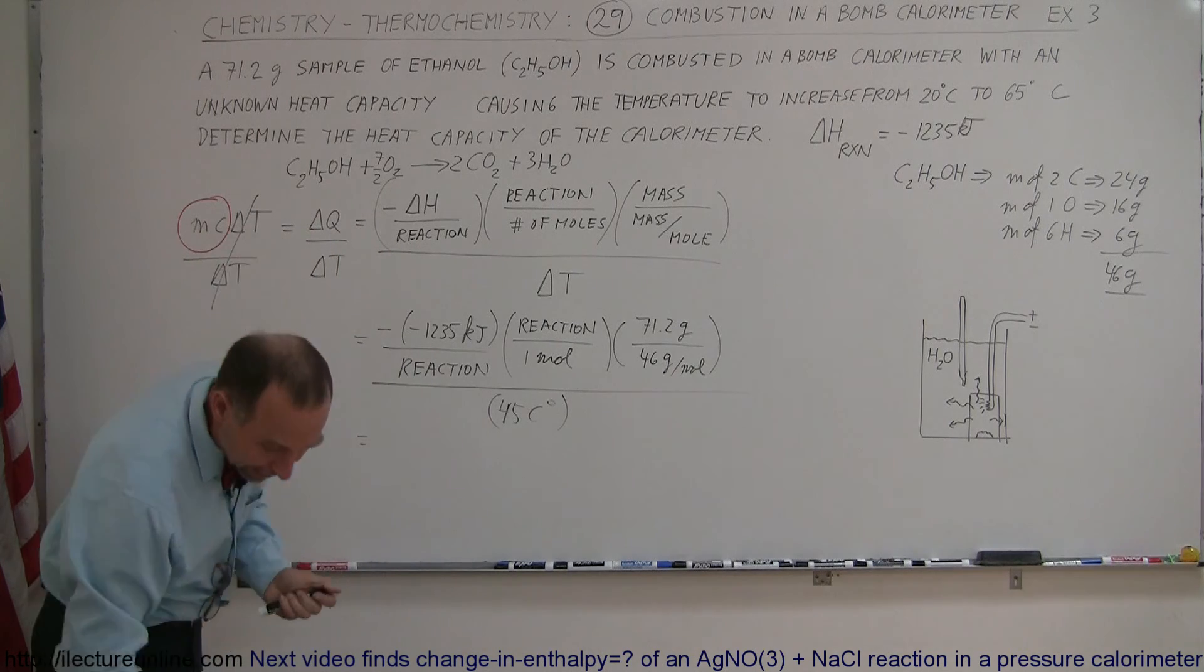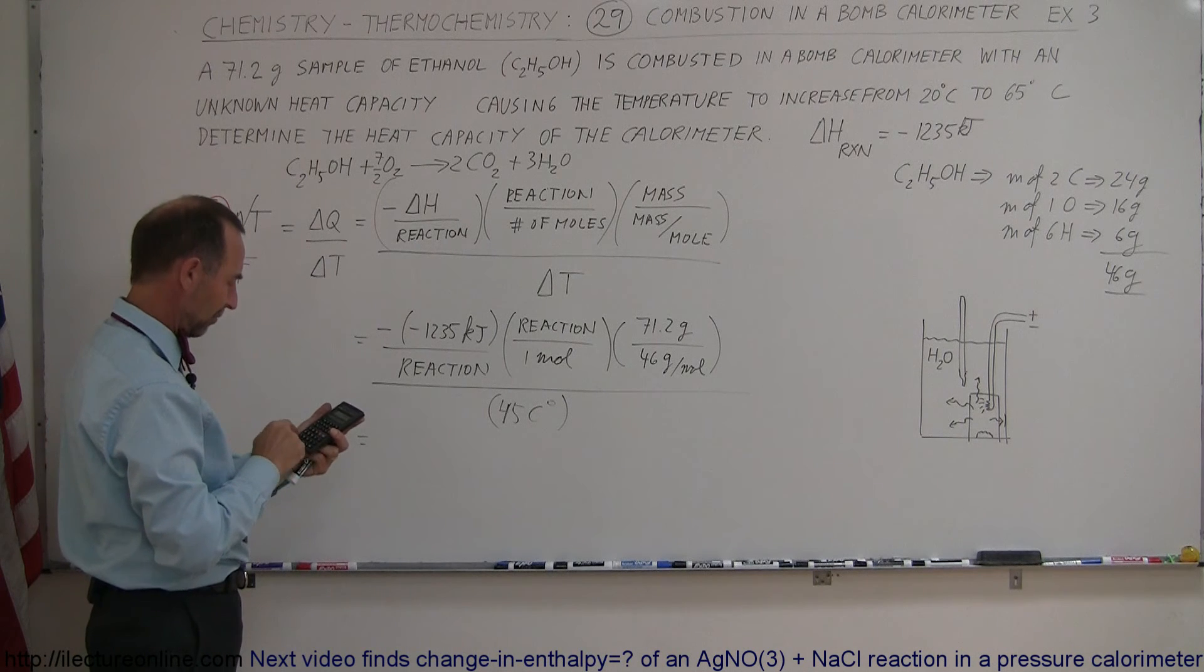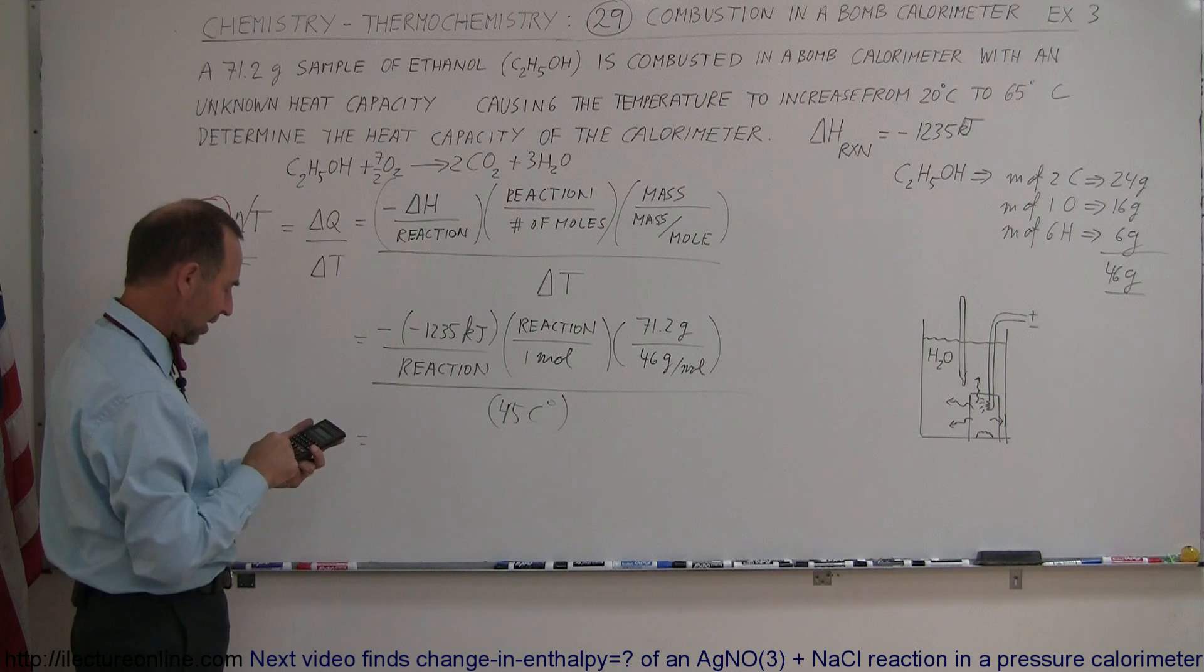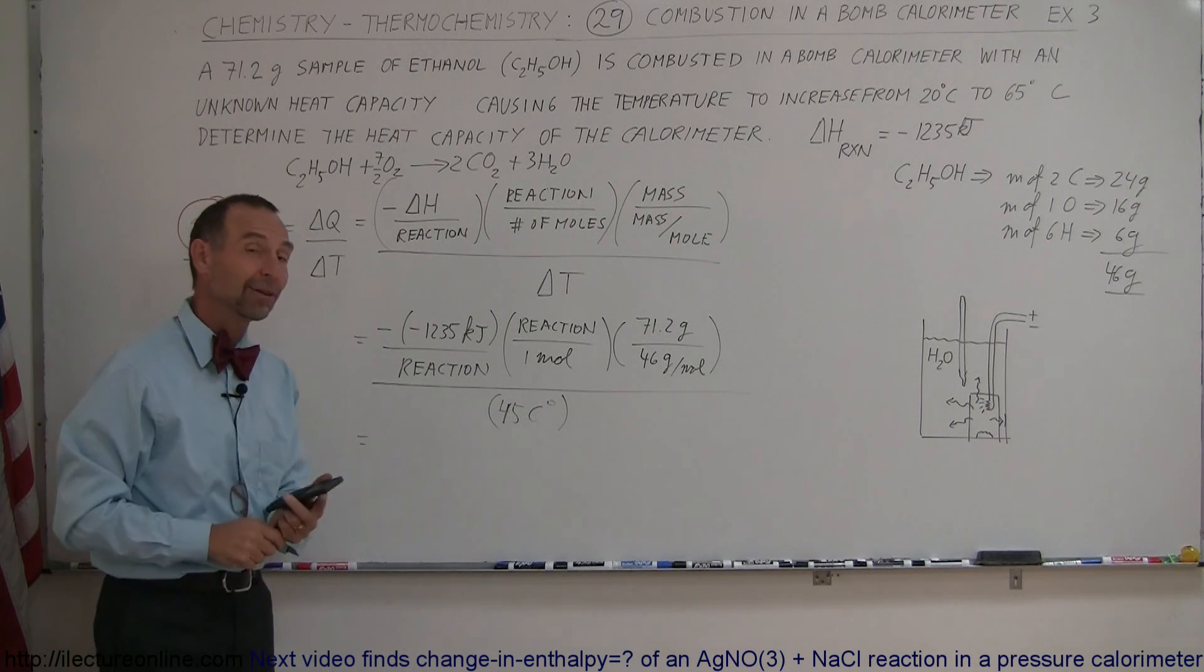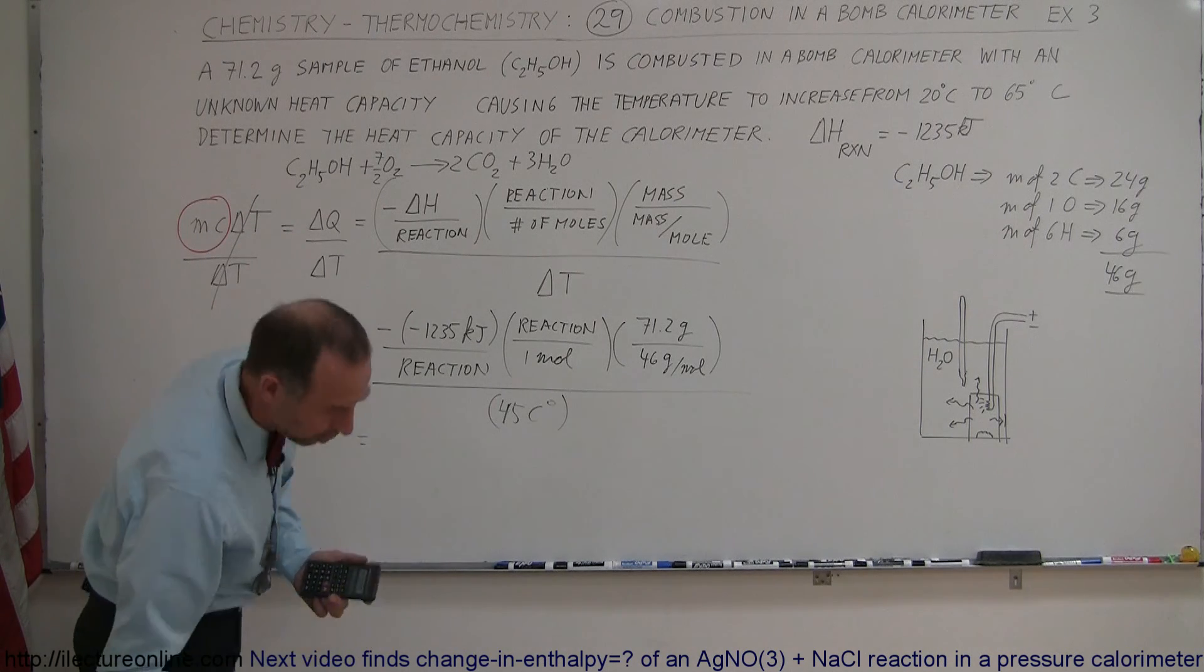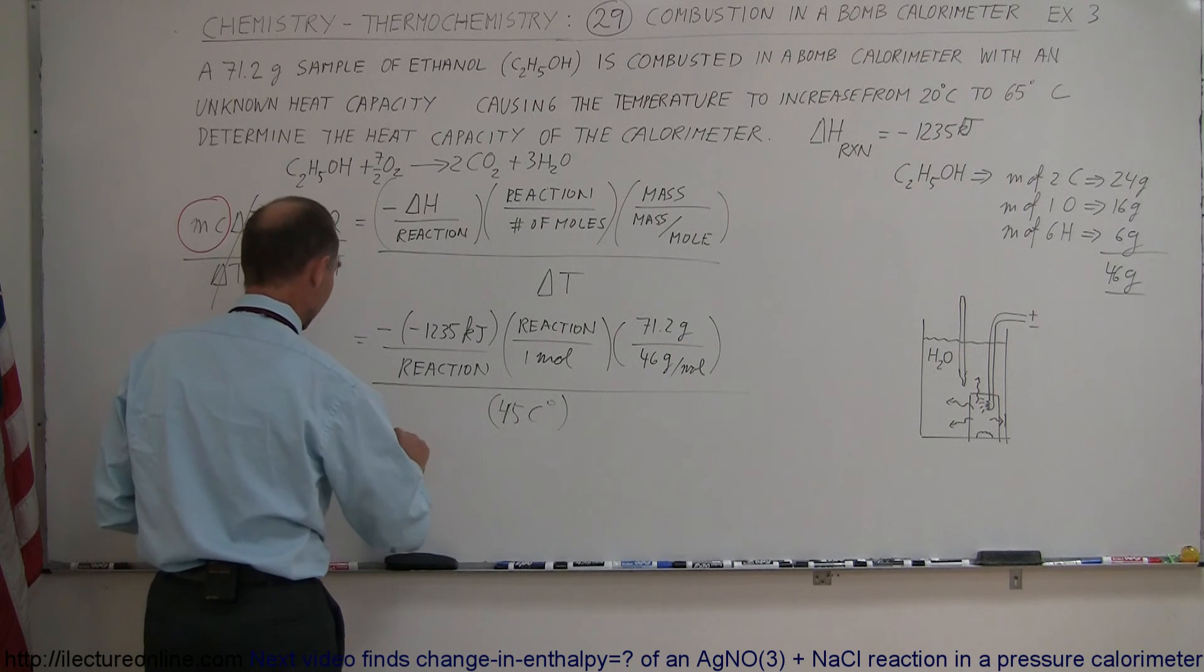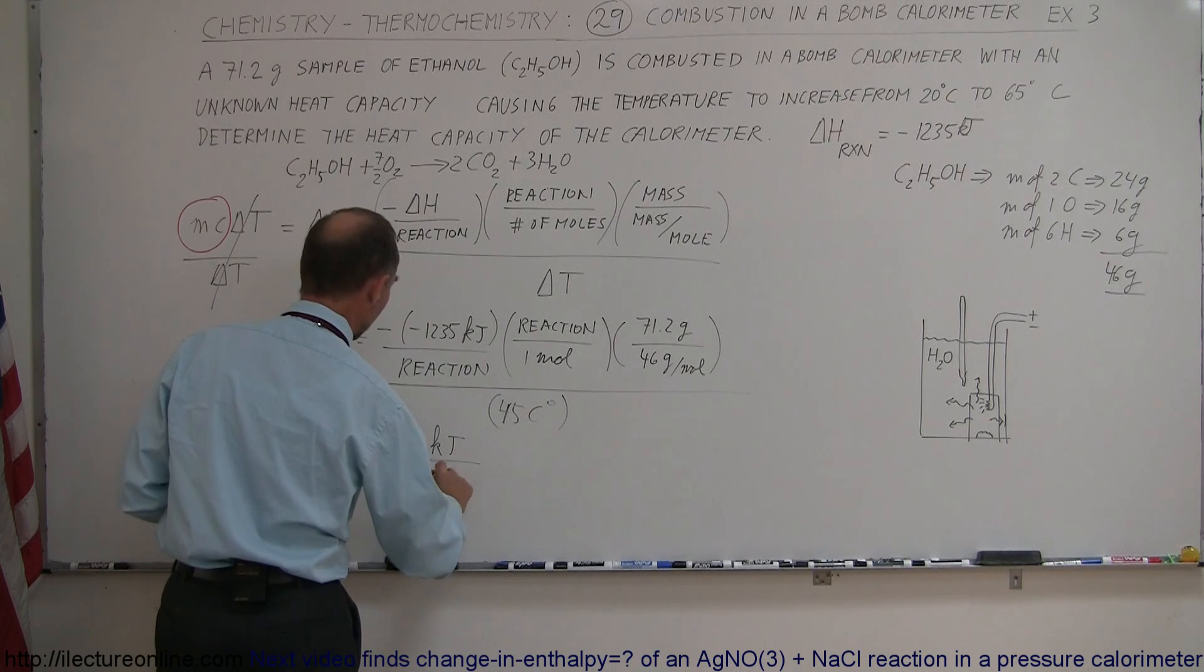And now we're ready to go ahead and calculate the heat capacity of the calorimeter. So we have 1235 times 1 times 71.2, divide by 46, and divide by 45. So altogether, we have ourselves a calorimeter with a heat capacity of 42.5 kilojoules per centigrade degree.